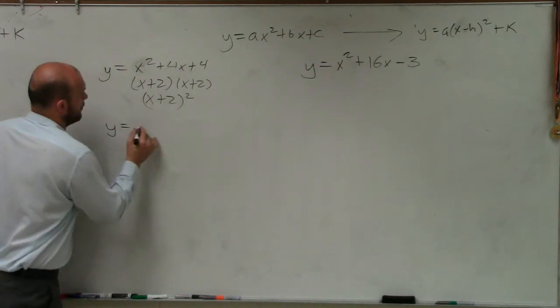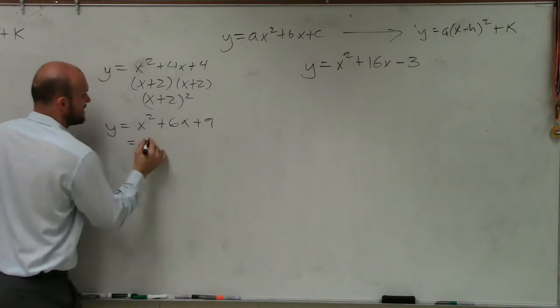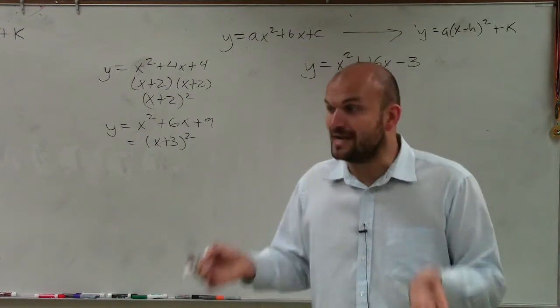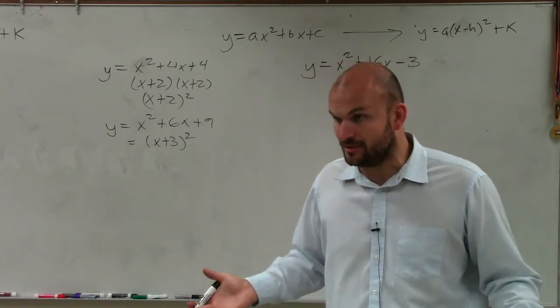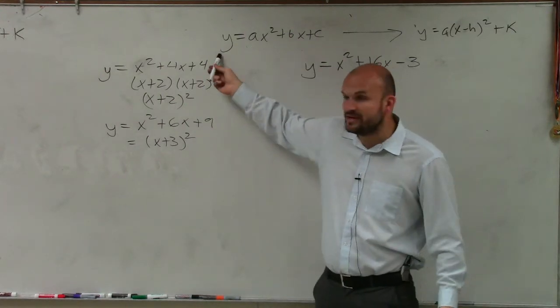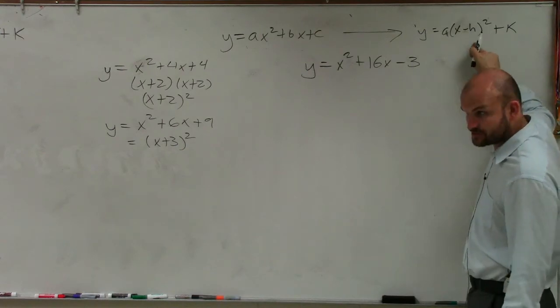Another example. y equals x squared plus 6x plus 9. That factors down into x plus 3 squared. So what I want you guys to understand is if we can create a perfect square trinomial, we can factor it to a binomial squared, right? And that's exactly what we want, is a binomial squared.